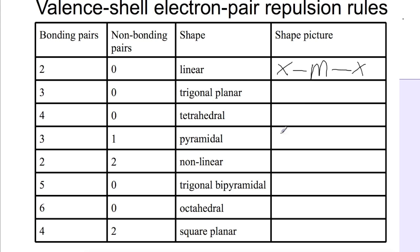For trigonal planar, if we've got three bonding pairs, again it's going to try and get as far away from each other as possible. So this time you're going to have a 120 degree bond angle. You can see here this is as far apart as those atoms can get.